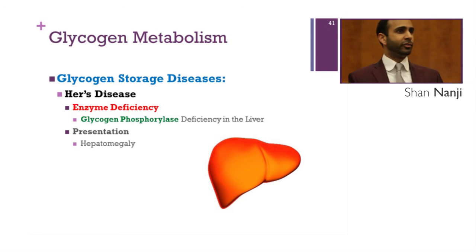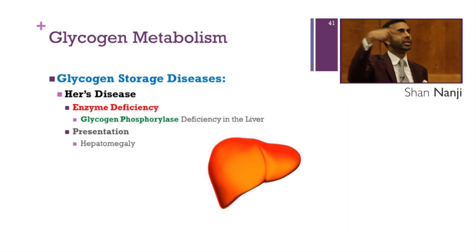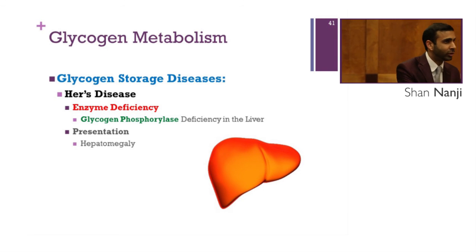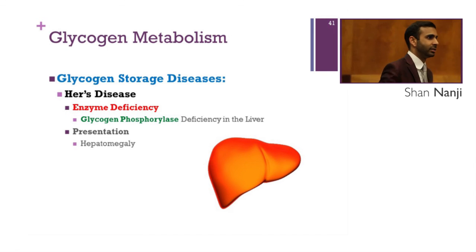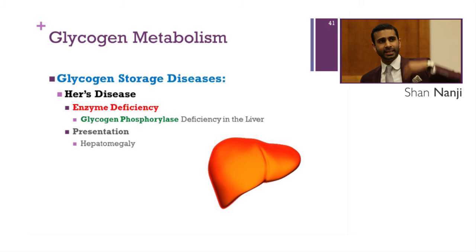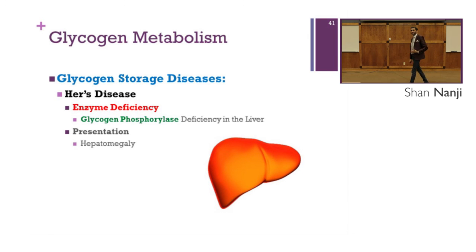Hers disease: the first two letters of Hers are H-E, matching the first two letters of hepatic. The enzyme deficiency is glycogen phosphorylase in the liver — contrast with McCardle's, which is glycogen phosphorylase in the muscle. The presentation of Hers disease is hepatomegaly. The treatment for all glycogen storage diseases except Pompe's is to feed small regular meals containing glucose every three to four hours, so glycogen never has to be used and symptoms are minimized.